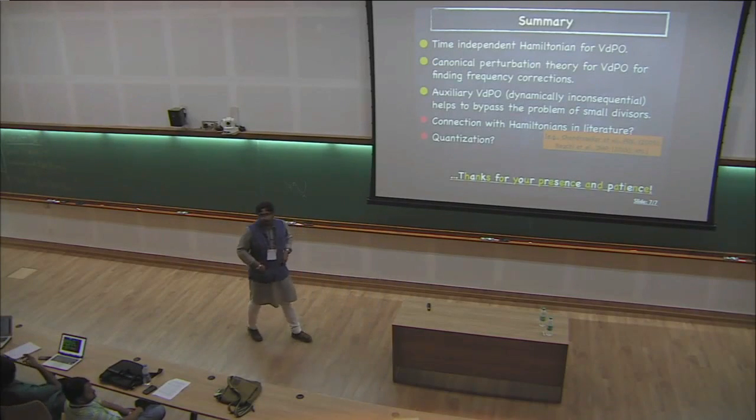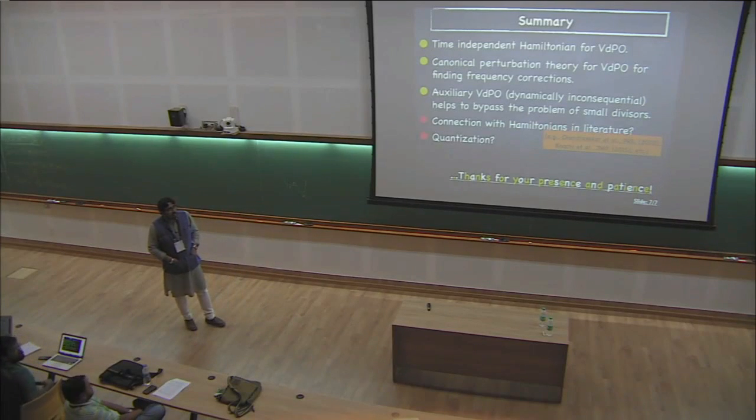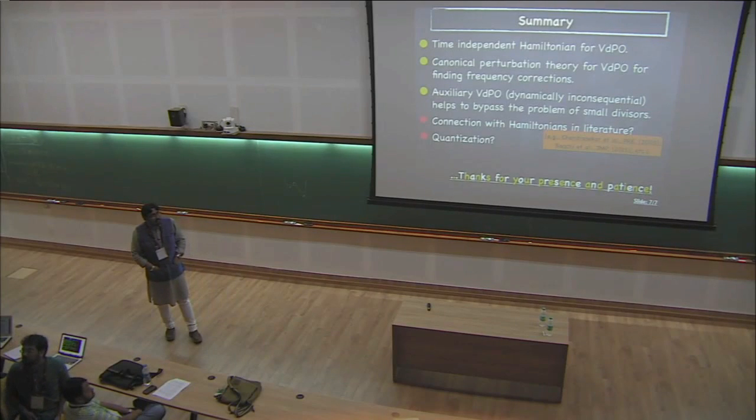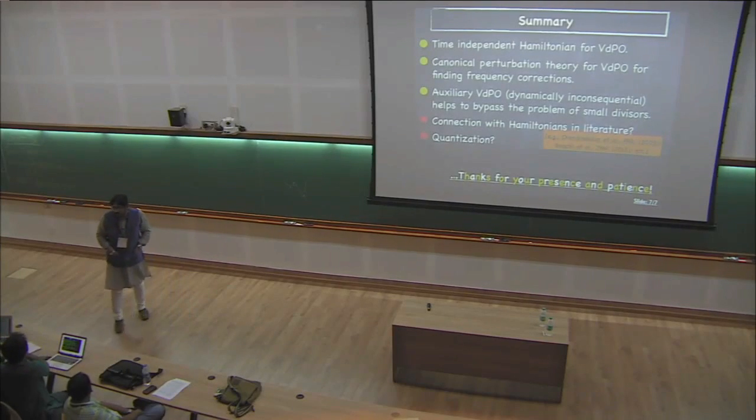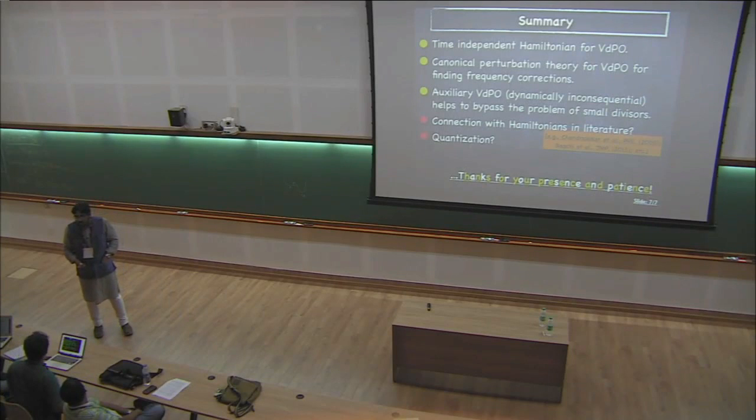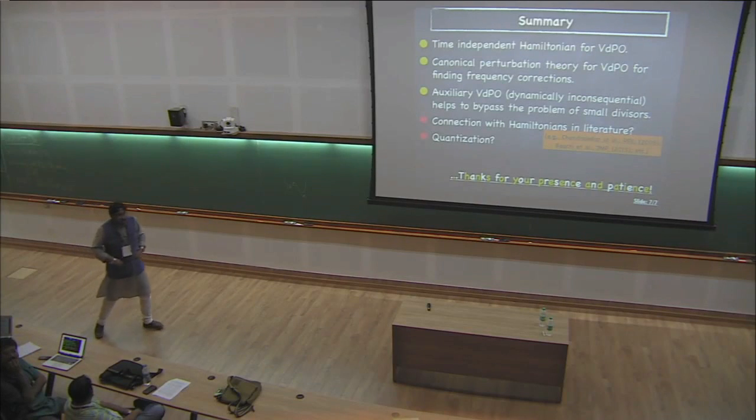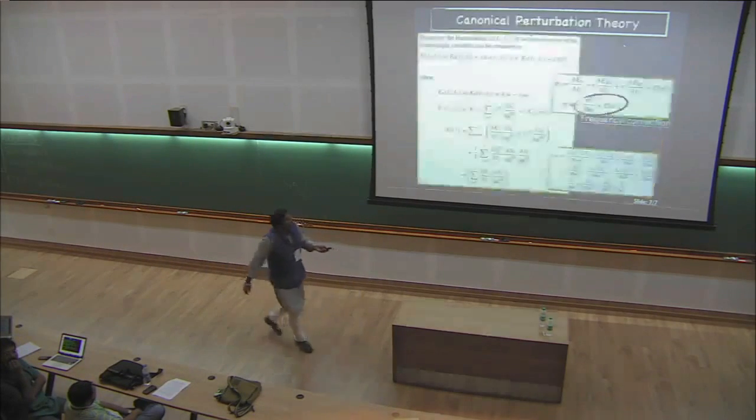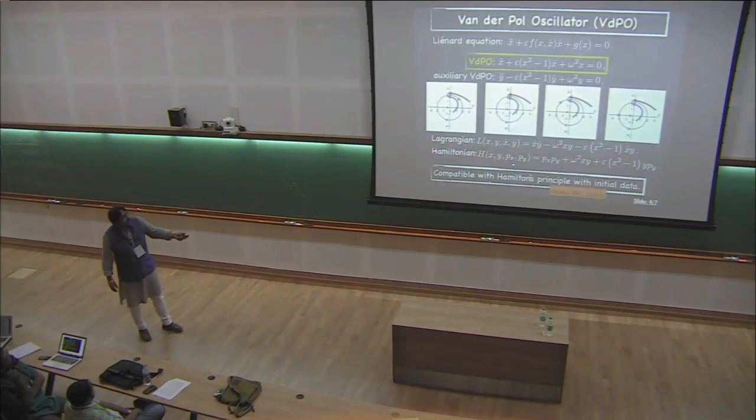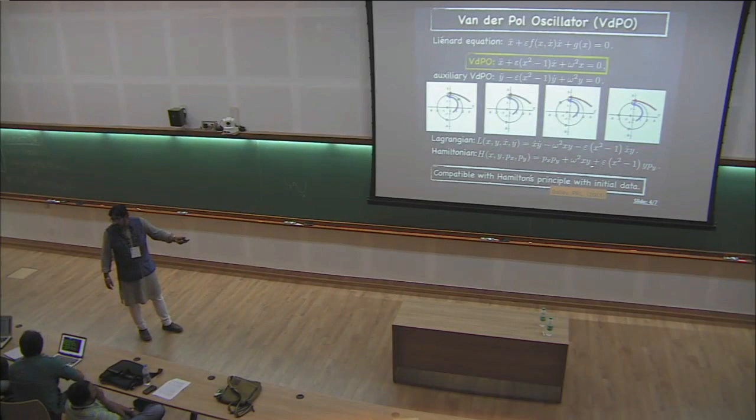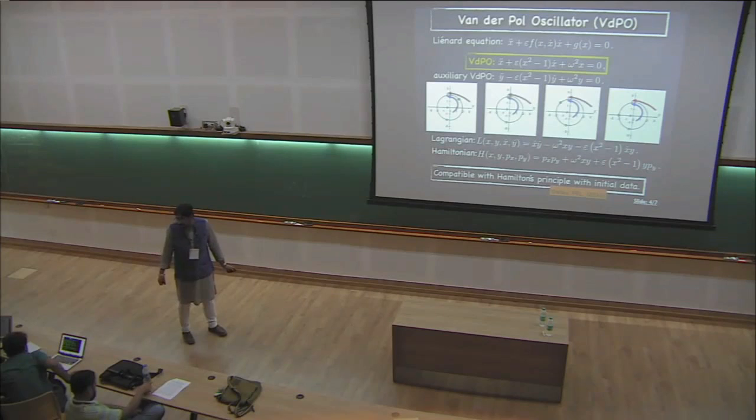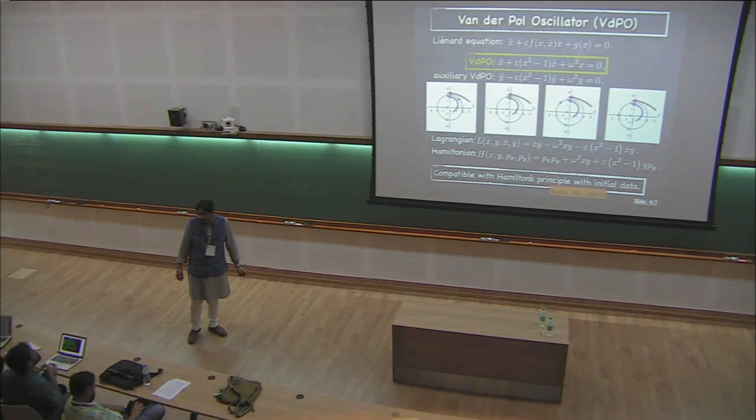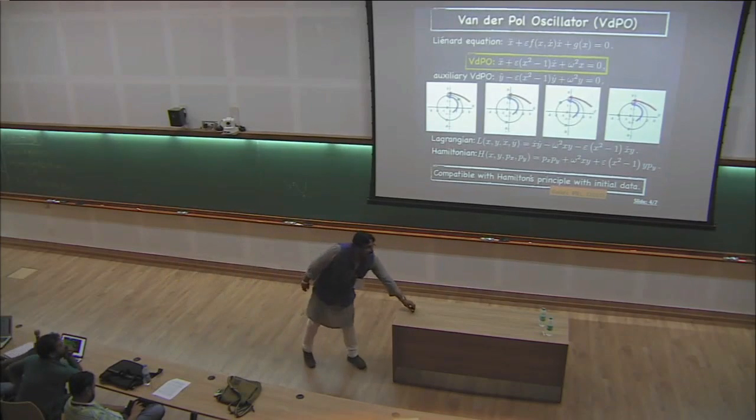Are there questions? So when you have one dissipative system and now you are modeling it by two, I mean like a Hamiltonian system. If I look at the original system, energy is going down, right? So the other guy is kind of energy going up? Yeah, that would be the idea. But one has to realize that this Hamiltonian which one is writing is not actually total energy.